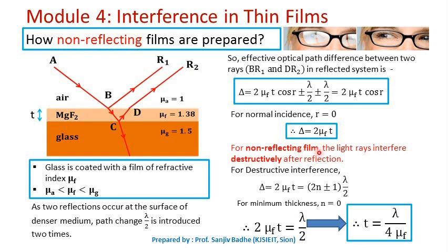For a non-reflecting film, rays BR1 and DR2 must interfere destructively after reflection. For destructive interference, the condition is that the optical path difference must be an odd integral multiple of λ/2. That is, 2μ_f·t must equal (2n ± 1)·λ/2. For minimum thickness, we put n = 0, so the condition for destructive interference becomes 2μ_f·t = λ/2.